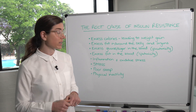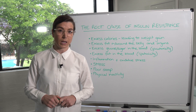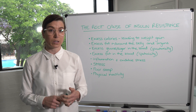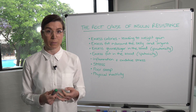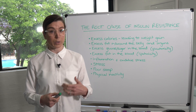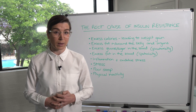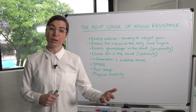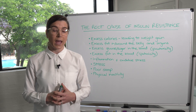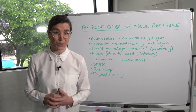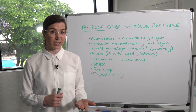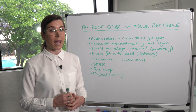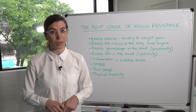Excess fat in the blood, also known as lipotoxicity. These excess fat molecules in the blood will cause damage to the pancreas and the beta cell, contributing to the progression of type 2 diabetes. They will compete with glucose to get into the cells and often win, because they don't need insulin to get into the cells, subsequently blocking the glucose out.